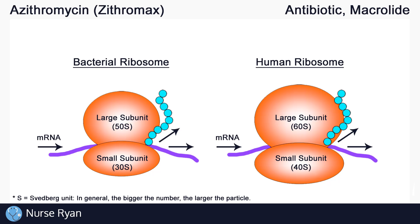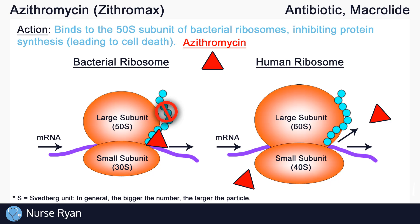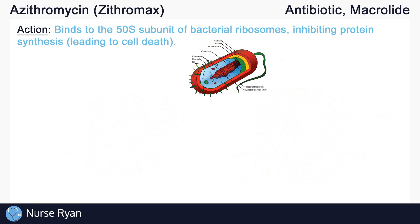Azithromycin — which we'll say are these red triangles here — happens to only target 50S subunits. Azithromycin binds to the 50S subunits and interferes with their ability to synthesize proteins. This means that only bacterial ribosomes are affected, leaving human cells untouched. So one last time: azithromycin enters bacterial cells, binds to the 50S subunit of the ribosomes, inhibiting protein synthesis, which eventually causes the bacteria to die. And that is how azithromycin, and macrolides in general, work as antibiotics.